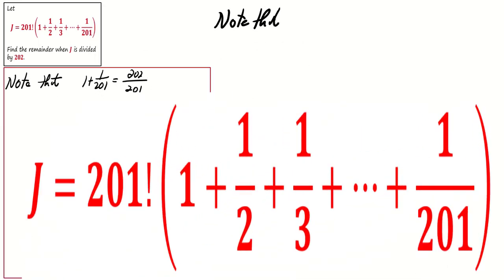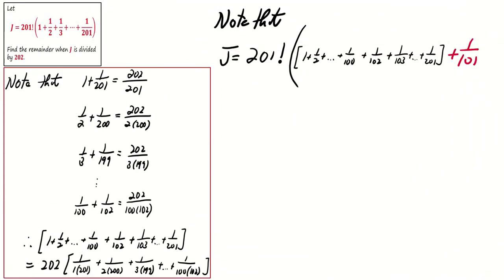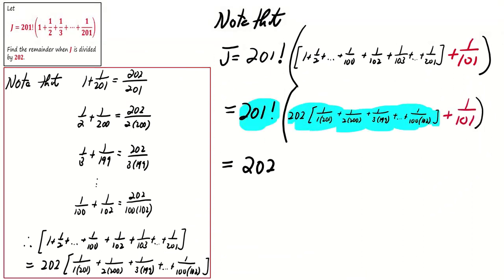Going back to the definition of J, let's rewrite it with the knowledge we have just uncovered. It becomes clear that J is a sum of a multiple of 202 and the integer 201 factorial divided by 101. Now, let's focus on the integer 201 factorial over 101.